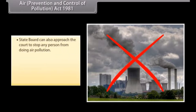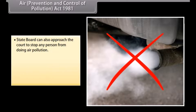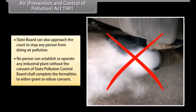The State Board can also approach the court to stop any person from causing air pollution. No person can establish or operate any industrial plant without the consent of the State Pollution Control Board, which shall complete the formalities to either grant or refuse consent.